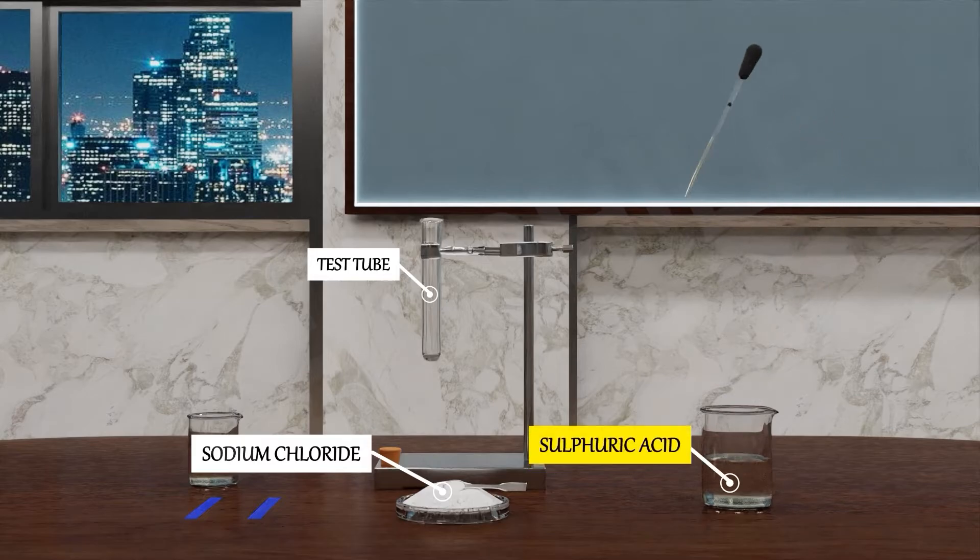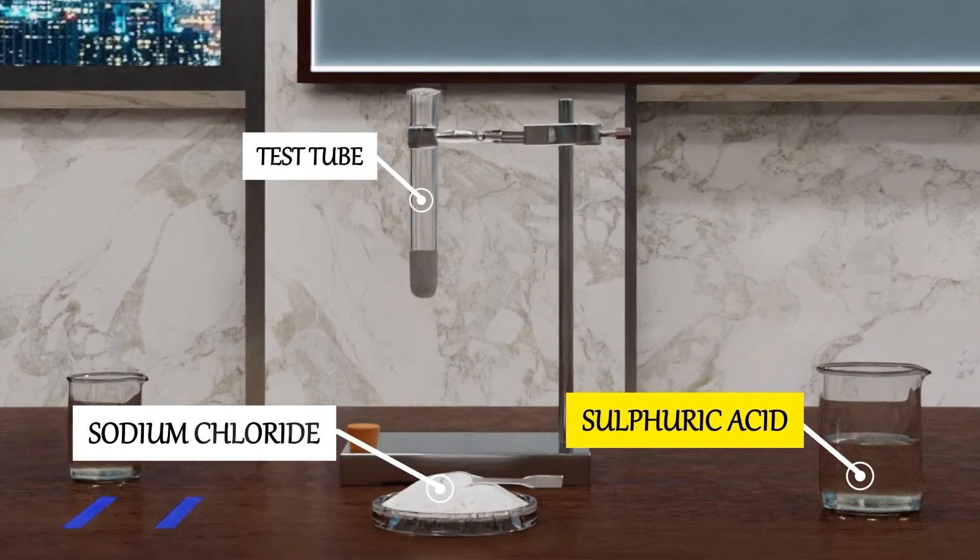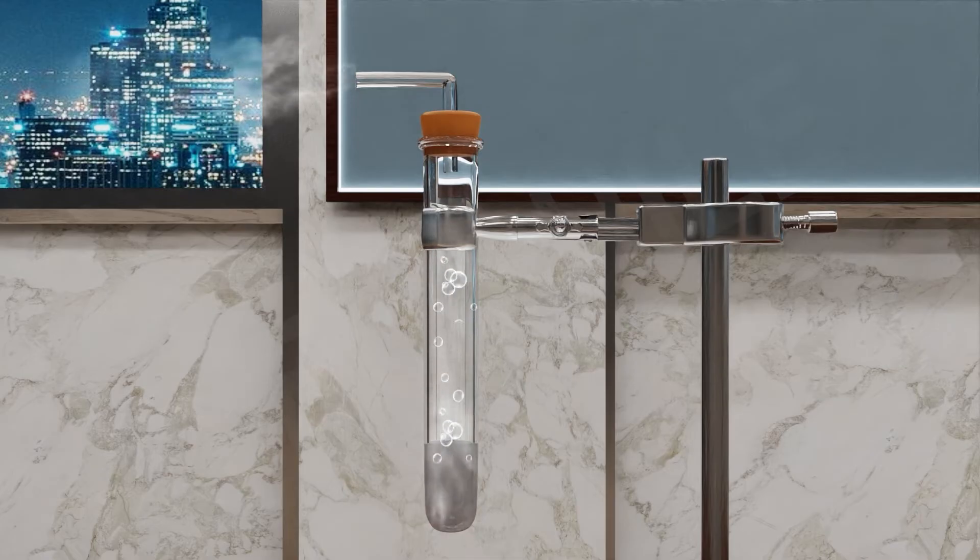Add some concentrated sulfuric acid, H2SO4, to the test tube. Can you see these bubbles? Bubbles means gases are produced. This gas is coming out through this delivery tube. But what is the nature of this gas?